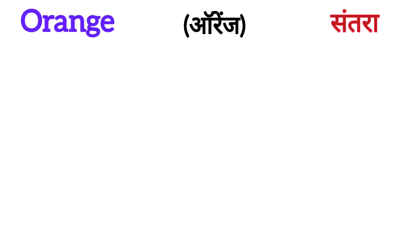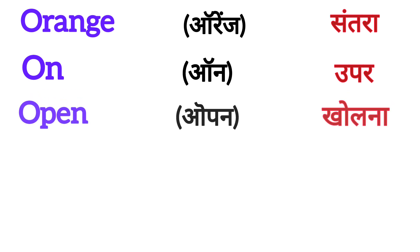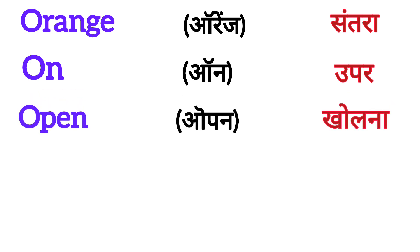First is Orange. Orange means SANTRA. Next word is ON. ON means OOPER. Next word is OPEN. OPEN means KHOLINA.